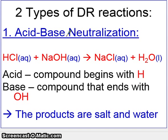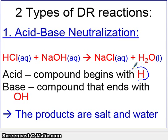We've introduced acids already, but as a review, an acid is a compound that begins with H — with hydrogen — and hydrogen is actually the active site of an acid. Here, for example, is your acid: HCl, hydrochloric acid, a famous acid.